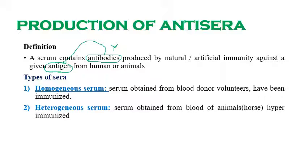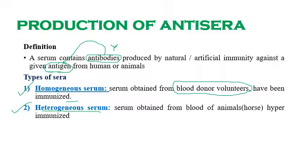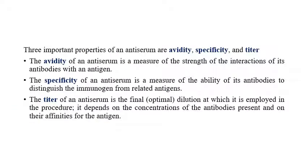There are two types of anti-sera: homogeneous serum and heterogeneous serum. Homogeneous serum is obtained from blood donor volunteers who have been immunized. The serum is collected from the blood of these immunized human volunteers. Heterogeneous serum is obtained from blood of animals — especially horses — that have been hyper-immunized, meaning they have undergone more than one step of immunization.